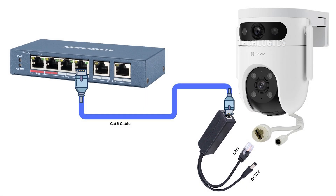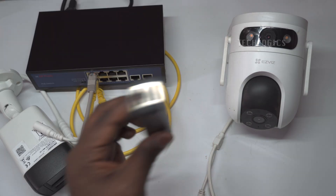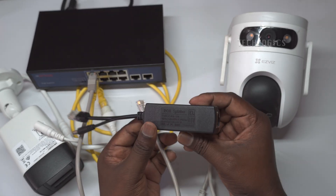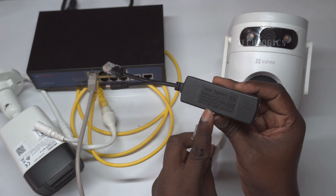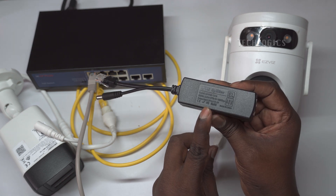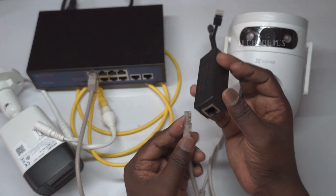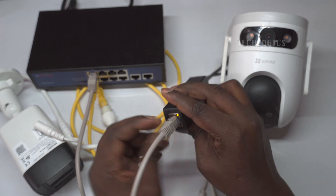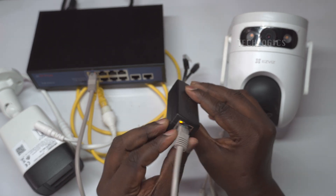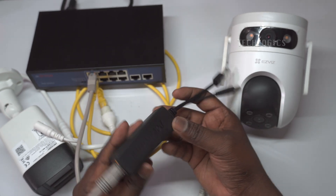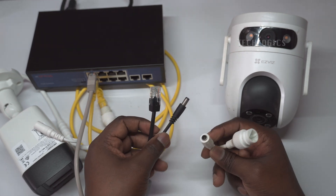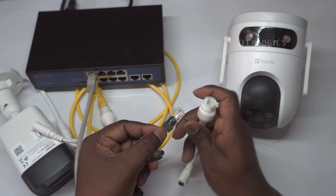The setup for using a PoE splitter between a camera and a PoE switch utilizes a PoE splitter to separate power and data transmitted over a single Ethernet cable. This allows non-PoE compatible devices to benefit from both power and data without needing a direct power connection. In this configuration, a CAT 6 cable connects the PoE switch to the camera, enabling remote transmission of data and power over distances of up to 328 feet, or 100 meters.